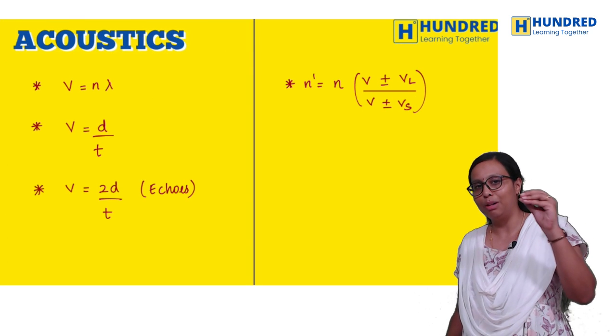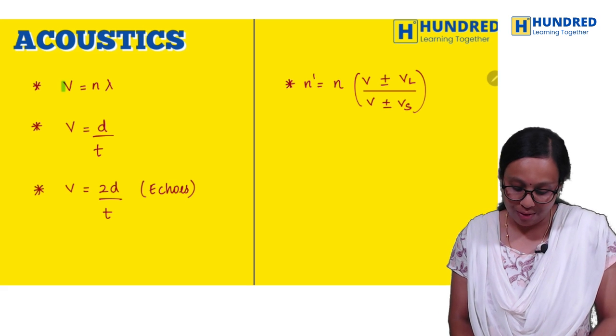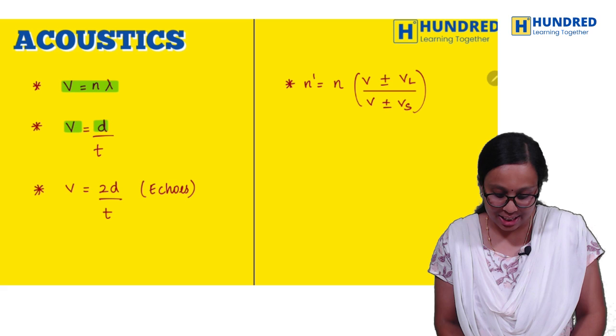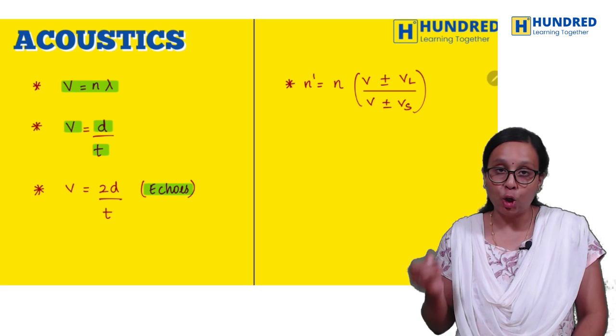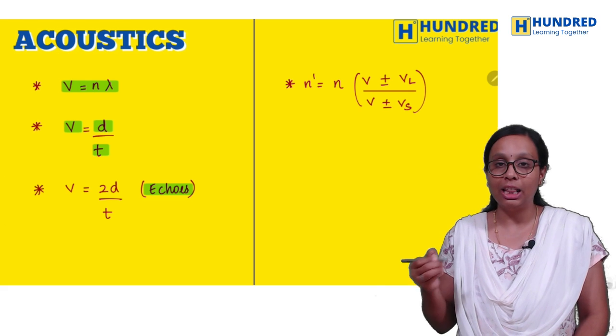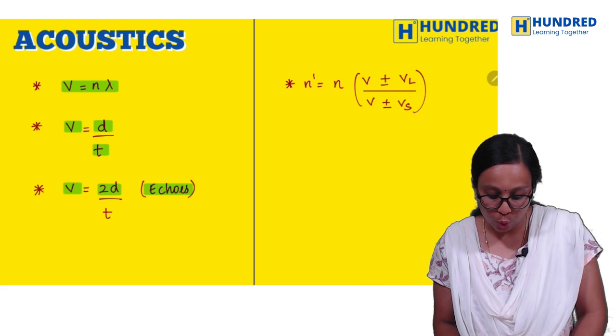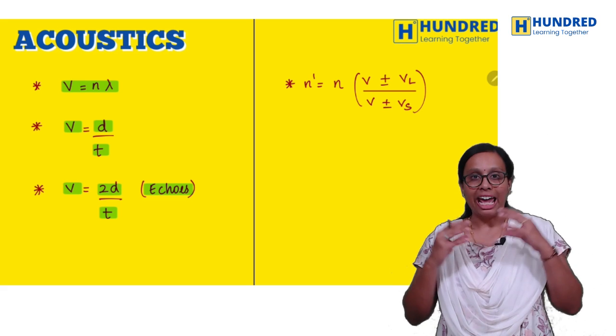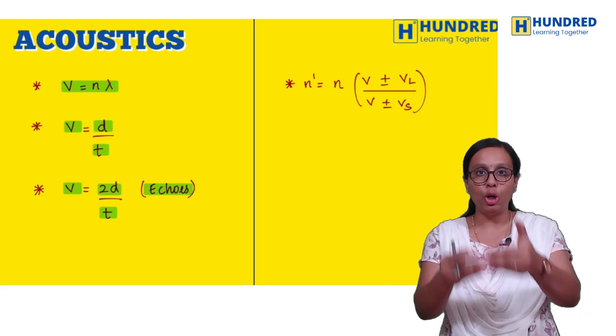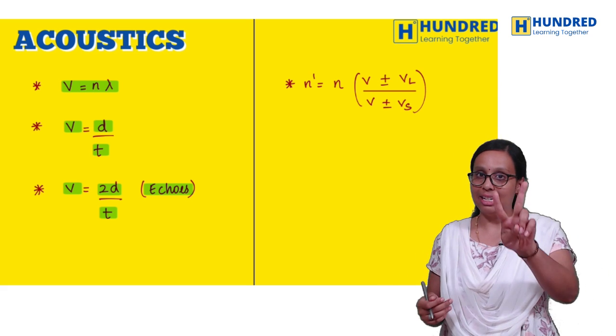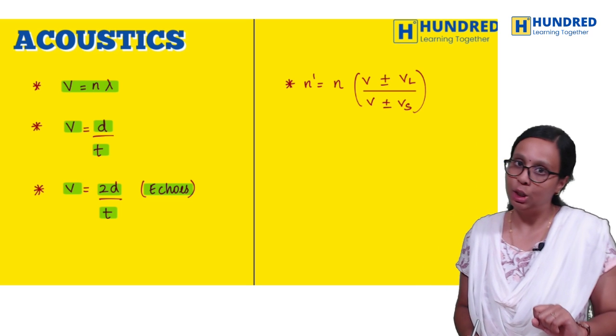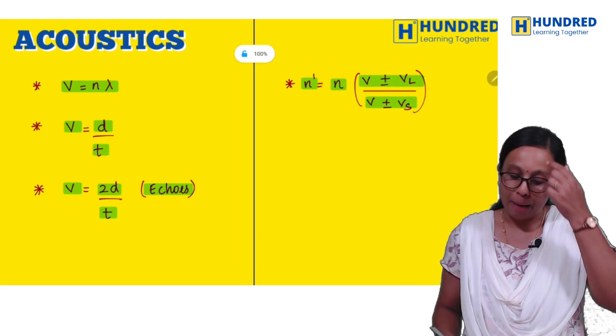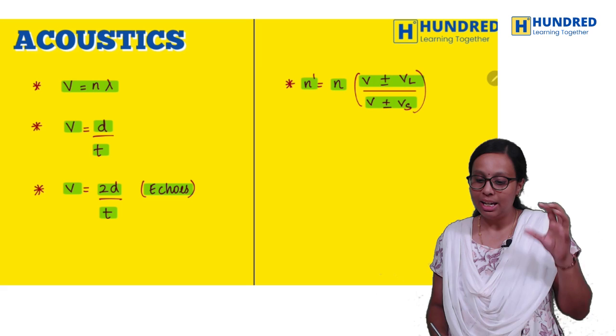For acoustics, v equals N lambda for wave velocity. Distance by time. V equals 2D by T formula is used for echo, where sound travels double the distance.